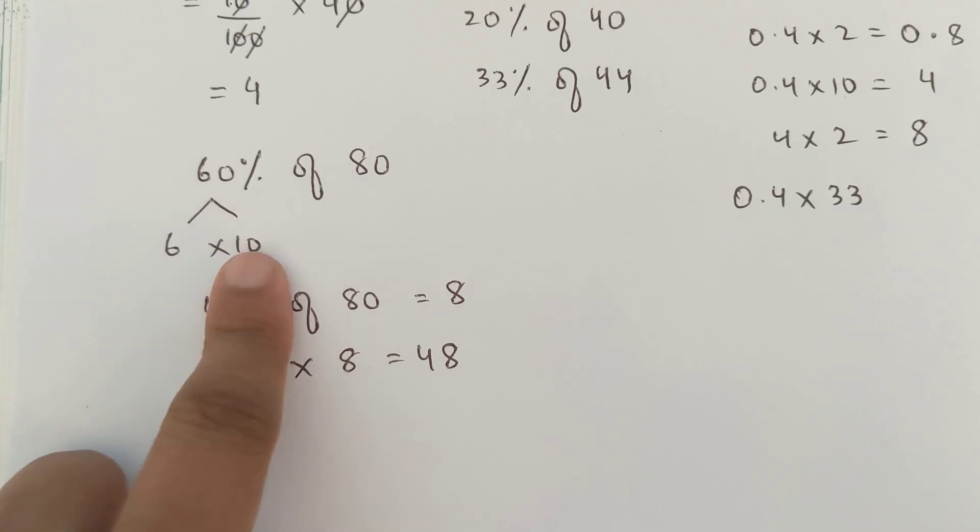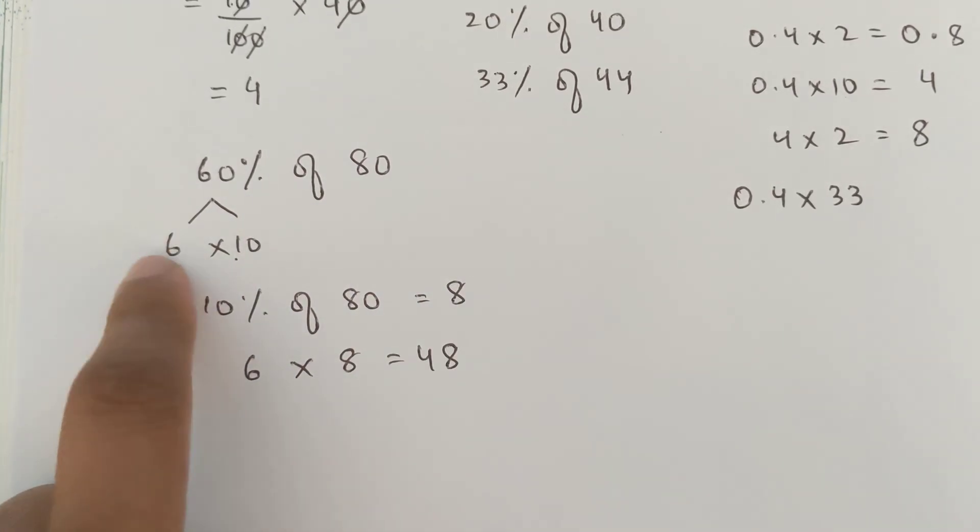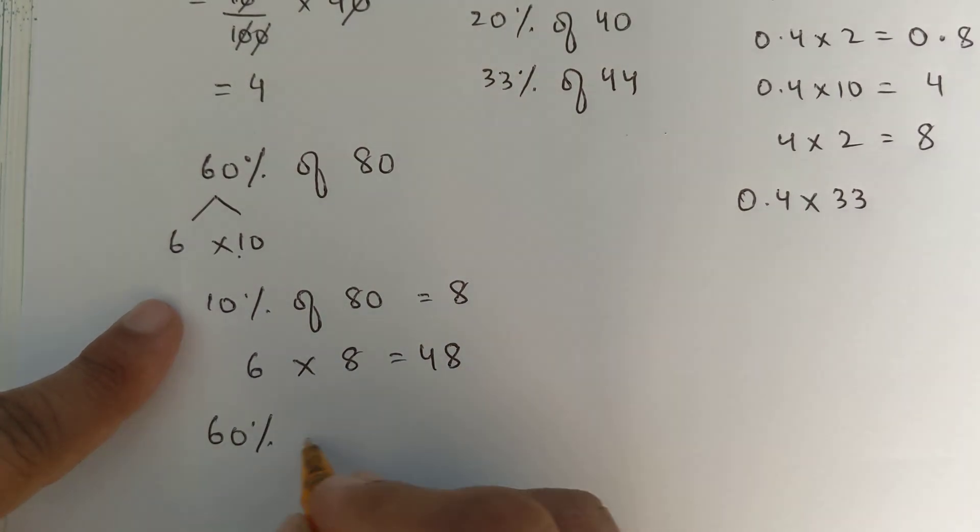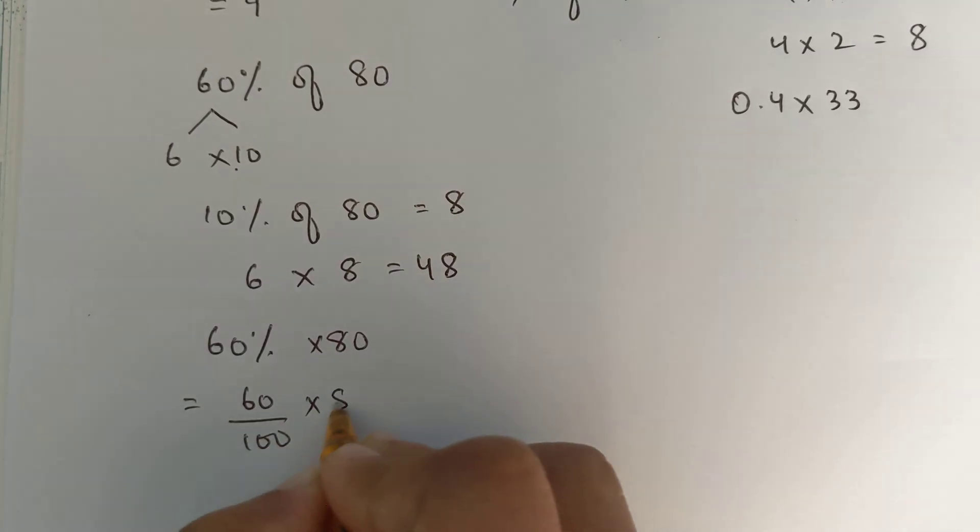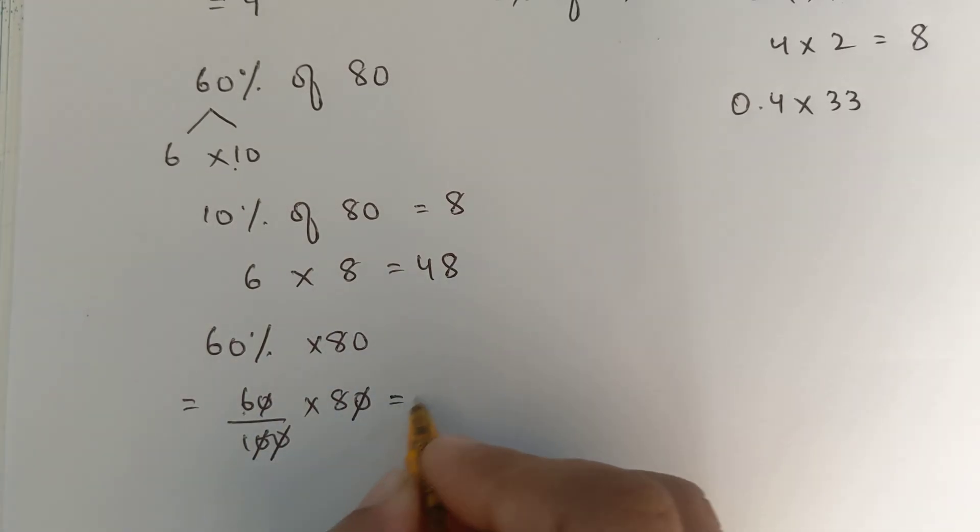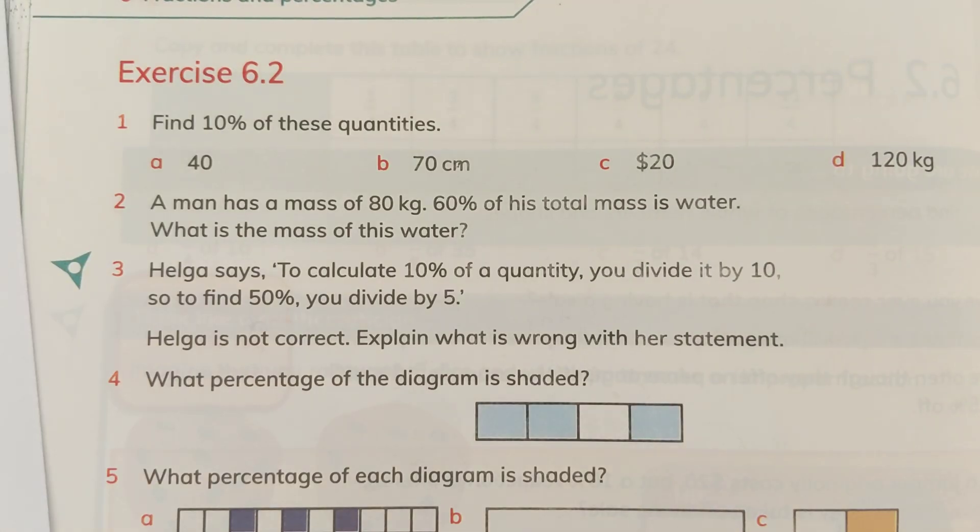You see what we did? First, we found 10% of 80. That was 8. Then, we multiplied the answer with 6. That's all. Or, you can do it like this. 60% multiplied by 80 is equals to 60 over 100 multiplied by 80. 0 cuts 0. Another 0 cuts another 0. What are we left with? 6 multiplied by 8 is equals to 48. Both methods are easy.